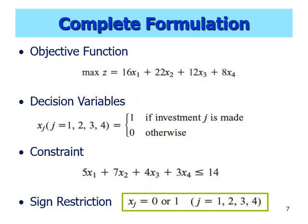Once you have the objective function, decision variables, and constraint, don't forget to add the sign restrictions — how you restrict the values of the variables. In this problem, it is obvious that we restrict each decision variable to take the value of either 0 or 1, where 1 means we choose to invest at that investment and 0 means we don't.